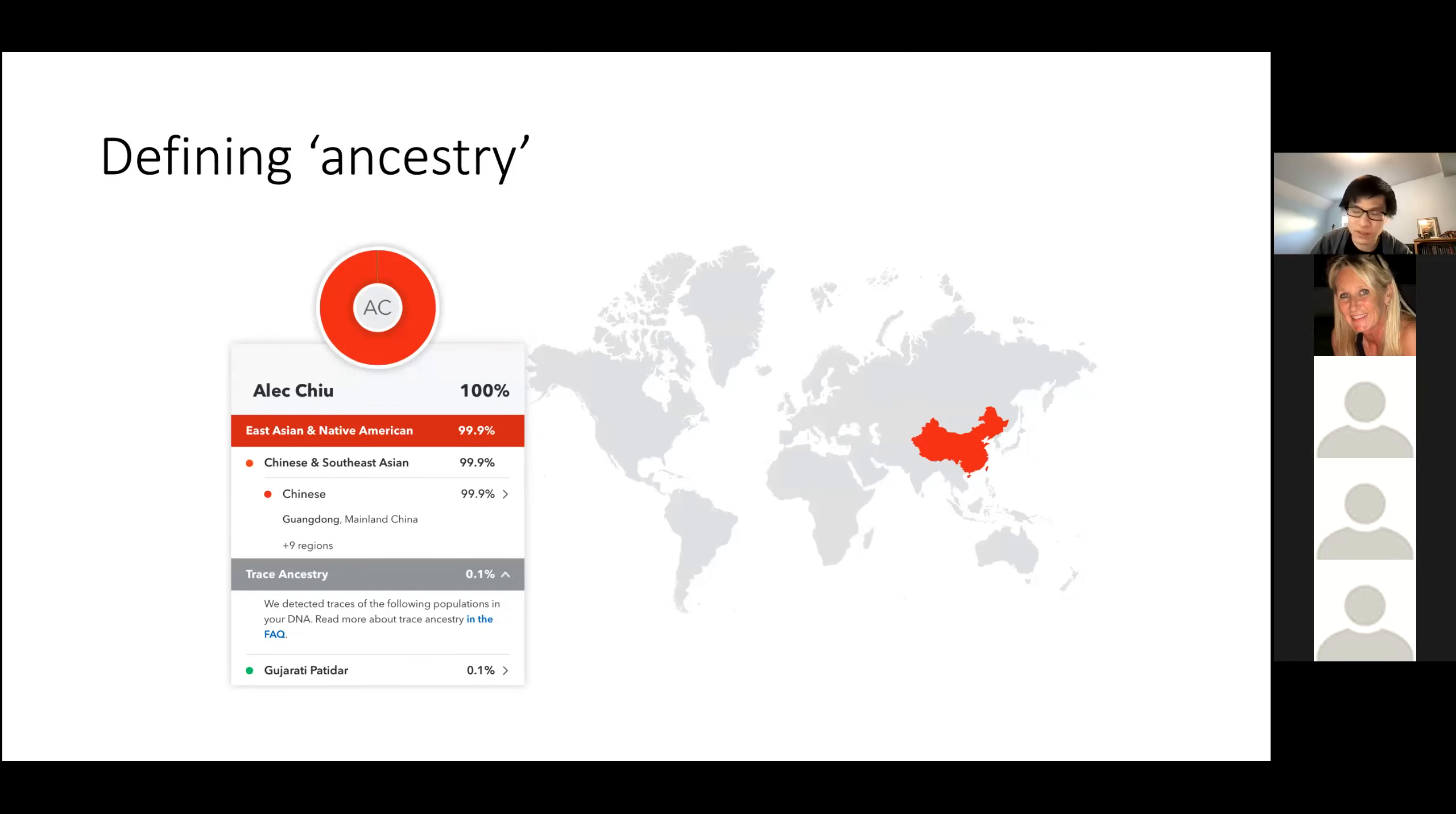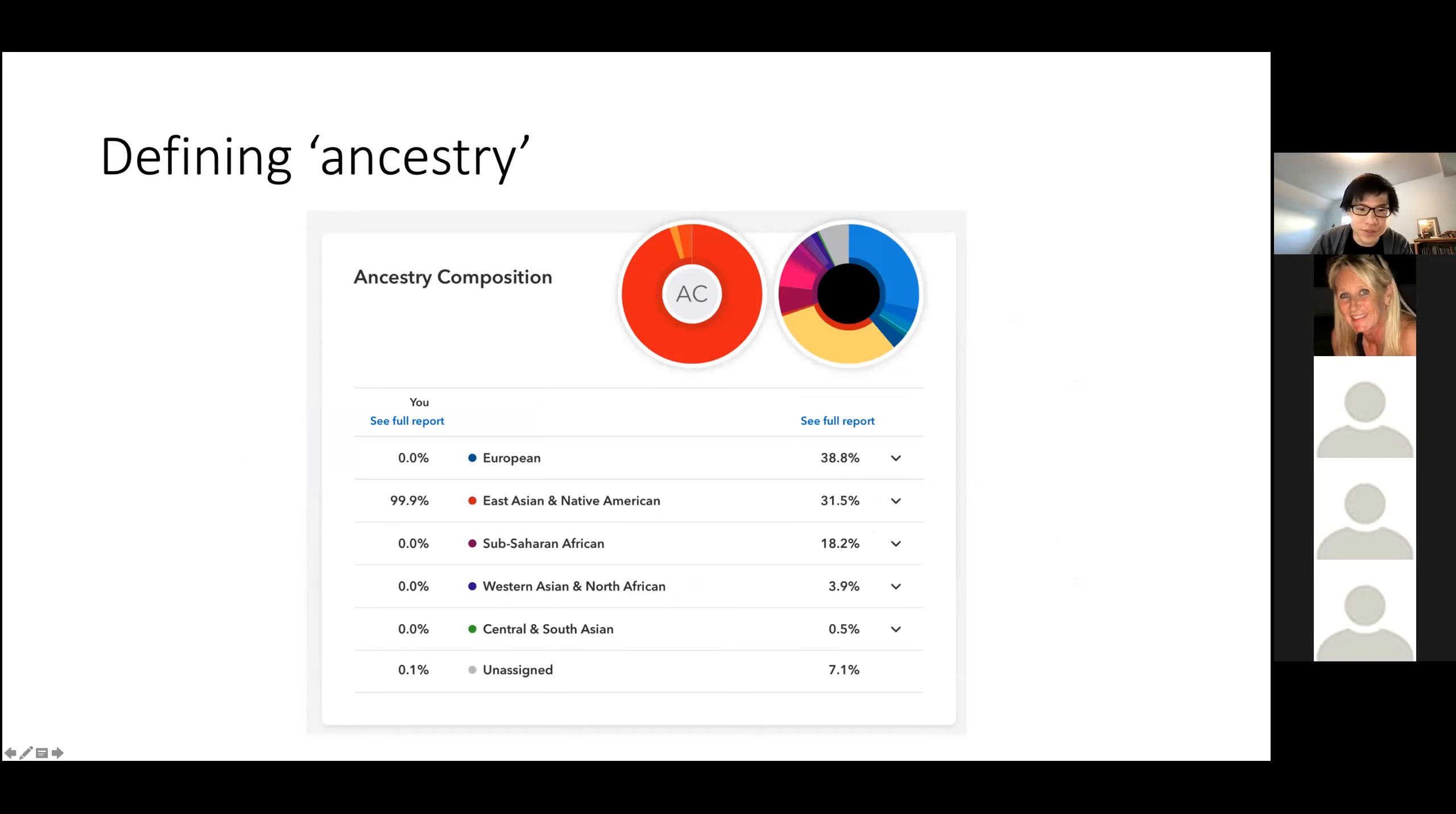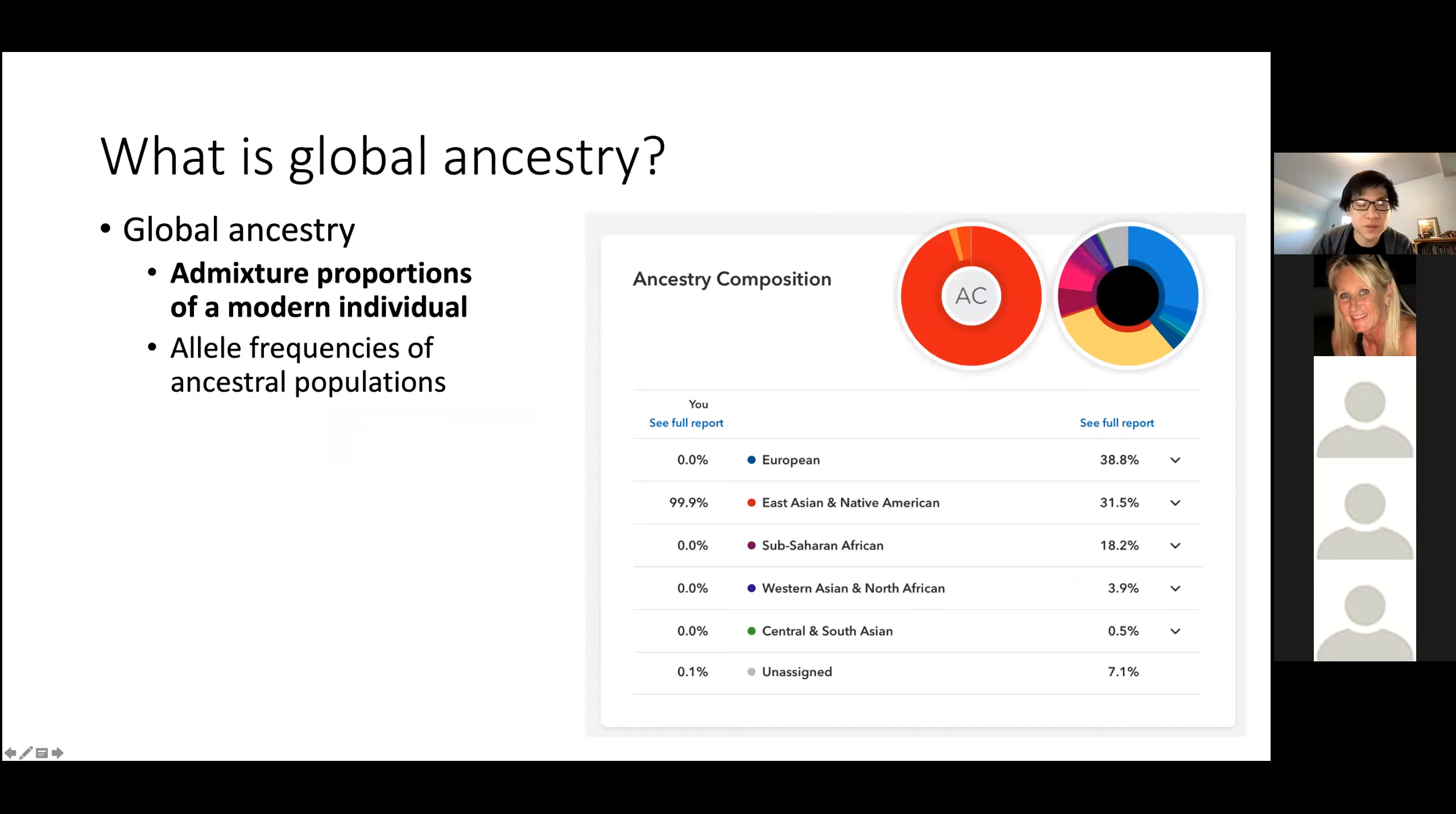For those who have done direct-to-consumer kits like 23andMe or ancestry.com, this might look familiar. This is actually my own from 23andMe, where they'll sequence your DNA and essentially tell you where you came from. Based on your DNA, they'll try to map you to specific regions. This brings us to a definition called global ancestry.